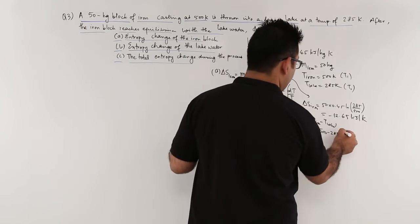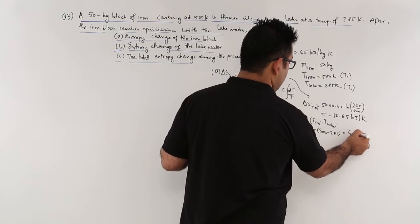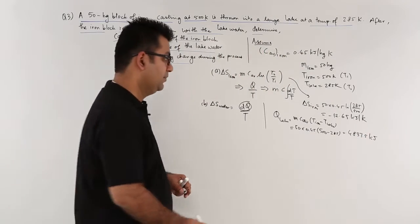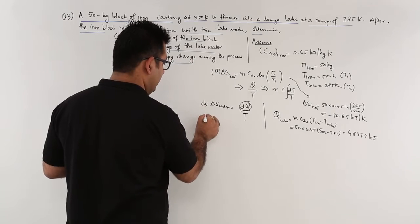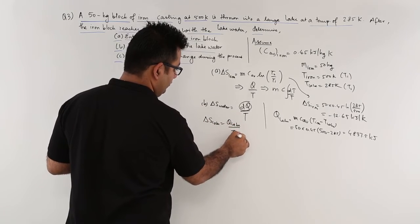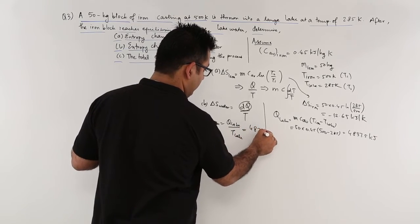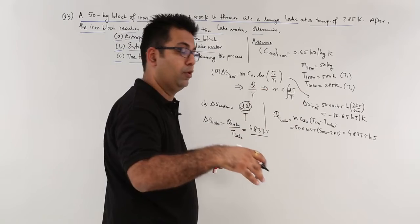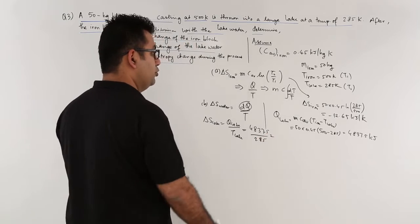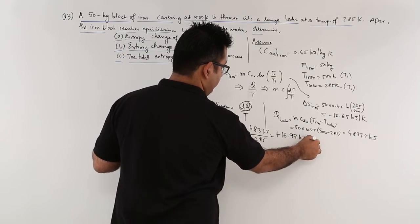The heat gained by the lake water is 4837.5 kilojoules. For the entropy change of the lake, we compute Q_lake divided by T_lake. The heat gained is positive, and T_lake is 285 Kelvin, so delta S for lake water equals plus 16.97 kilojoules per Kelvin.